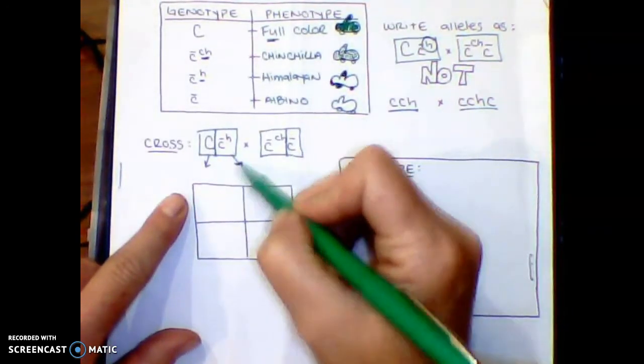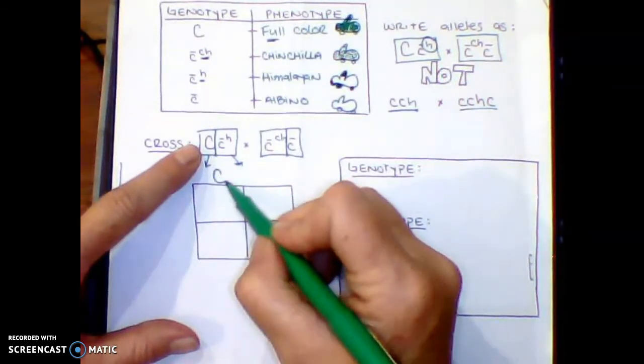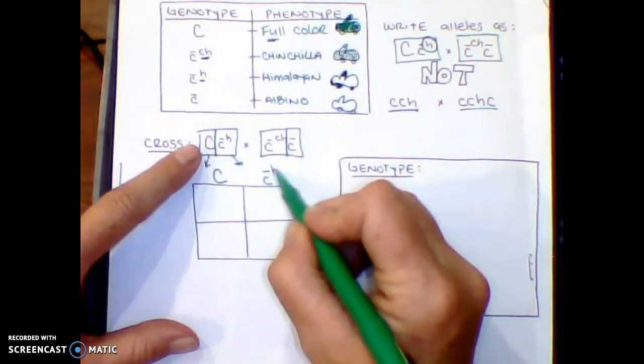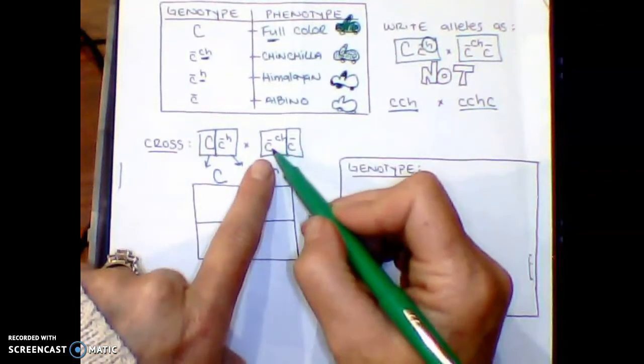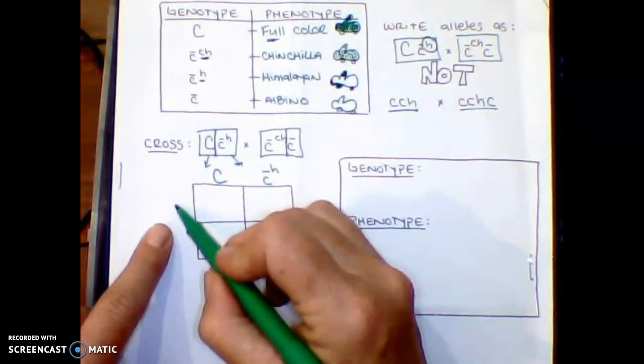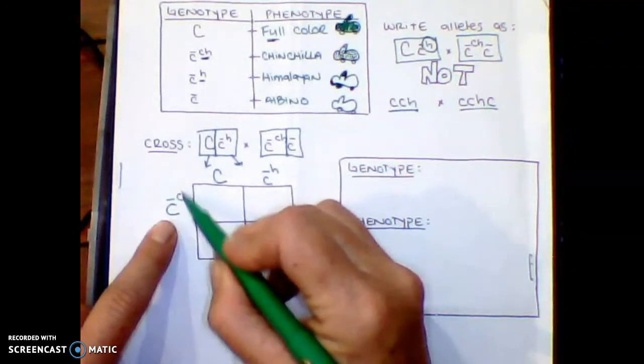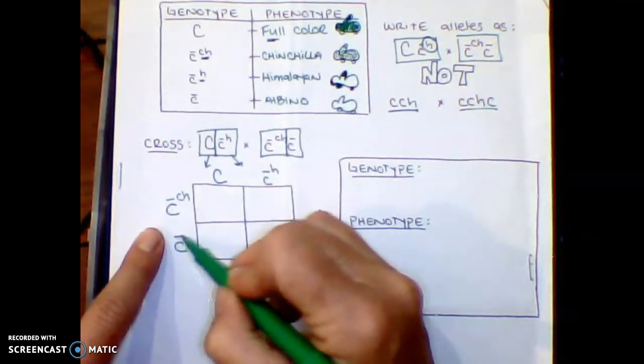So if this is c CH, my second allele combination is the little c. Now you guys can split these apart. So just like normal, A and B, right? So big C, c H. So remember, law of segregation. Separate these out. And then this parent, we'll put over here, the first allele combination is little c CH, and then little c.